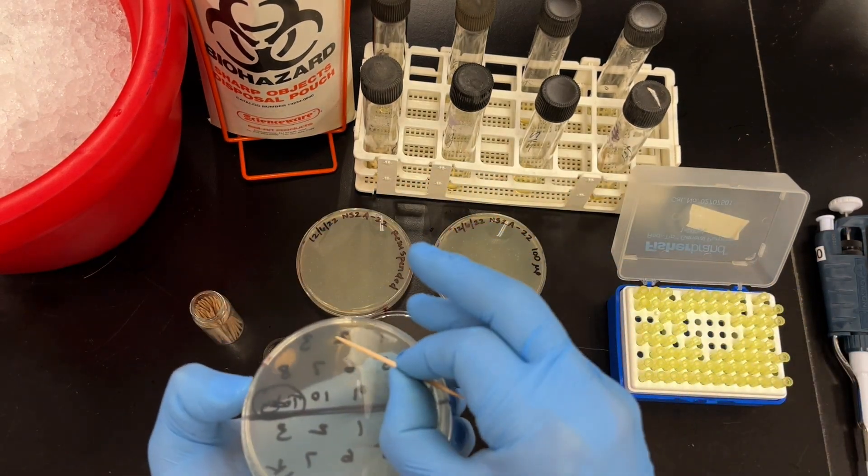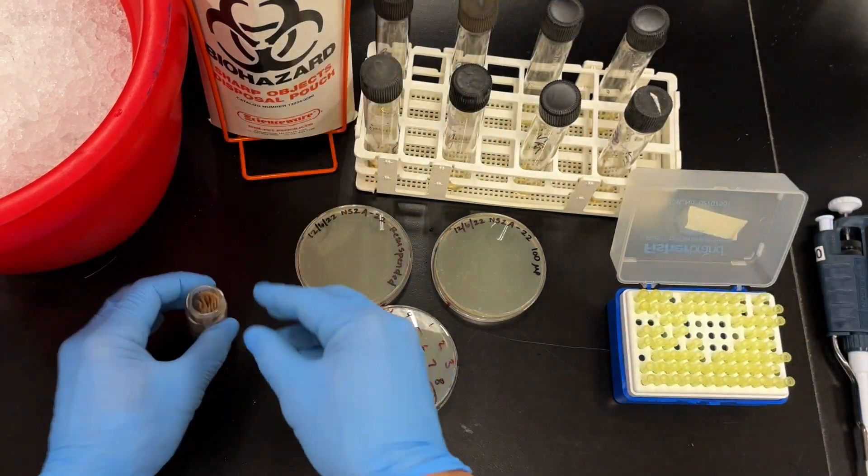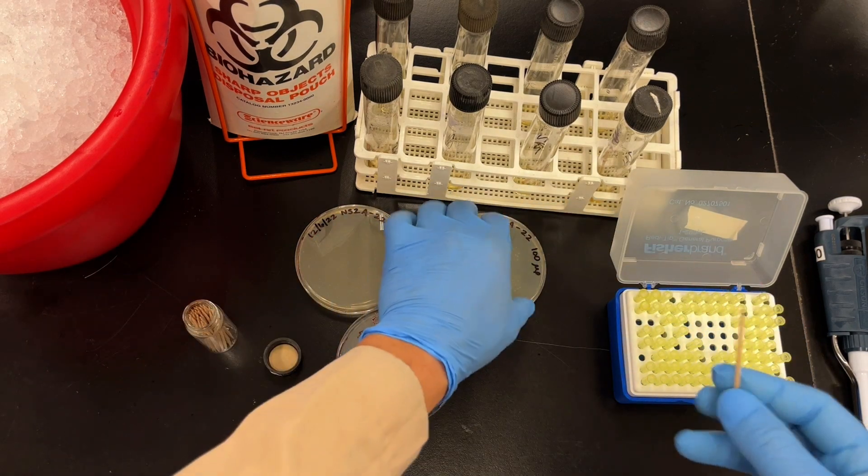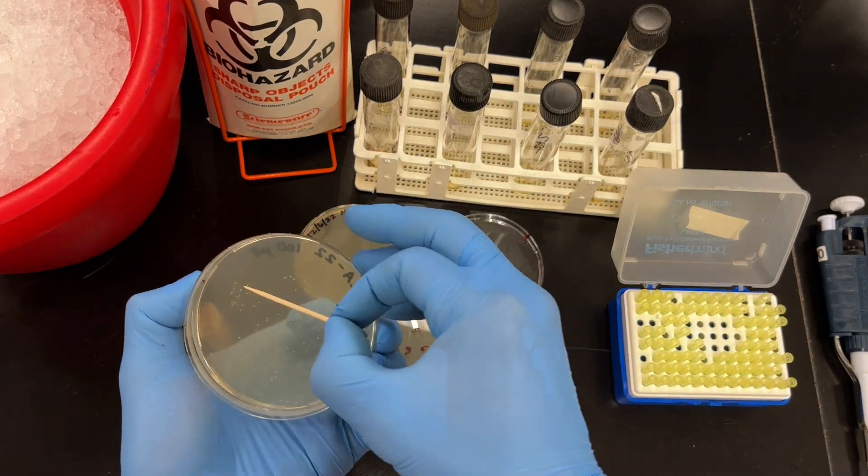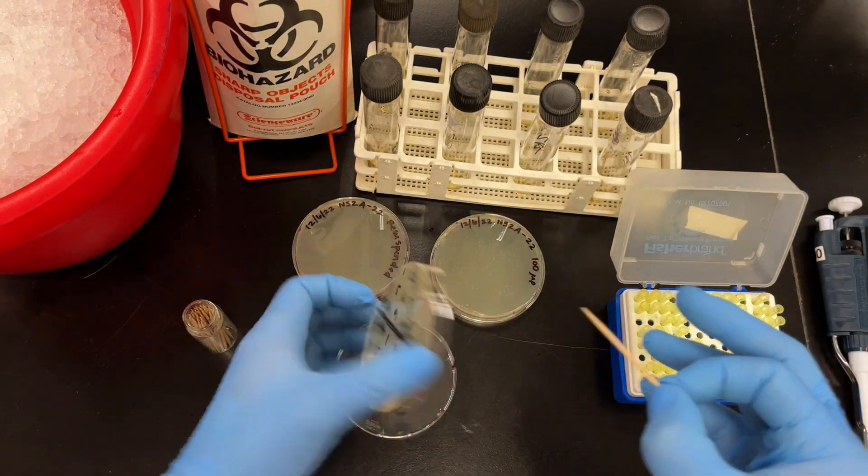Just note that the colonies you choose have to be well isolated, separated from each other. Make sure that you don't pick any that are touching each other or very close, because you want to pick individual clones. Otherwise you can run the risk of picking multiple clones in the same colony and getting ambiguous results.